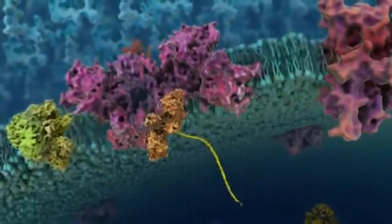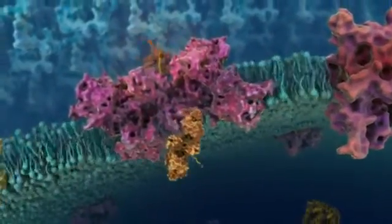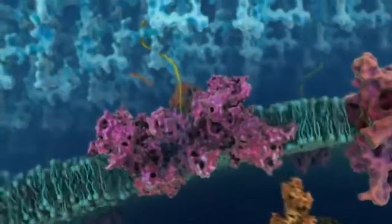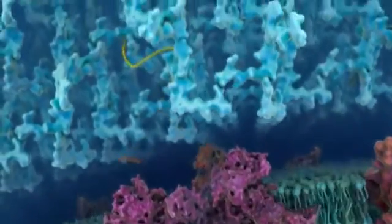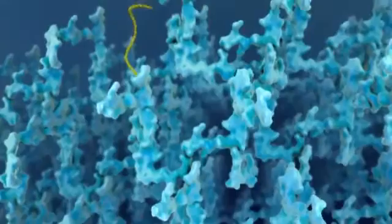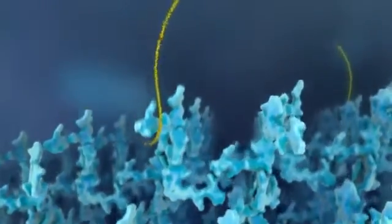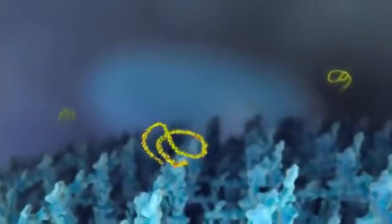The signal peptide is recognized by the SEC translocase and initiates protein secretion. As the leader signal peptide reaches the outside of the cell, it is cleaved by the membrane-bound peptidase, and the remaining protein is secreted and subsequently folds in the media.